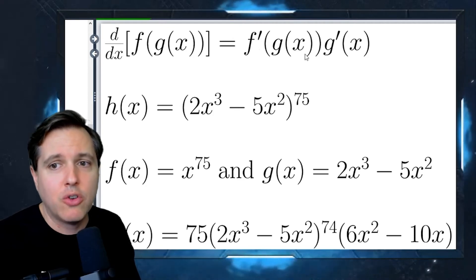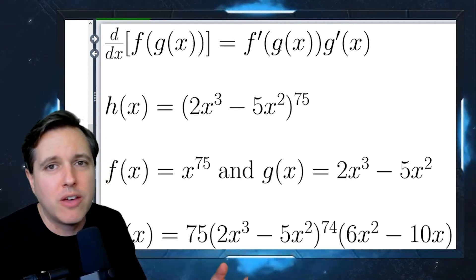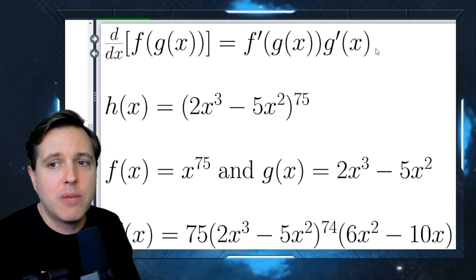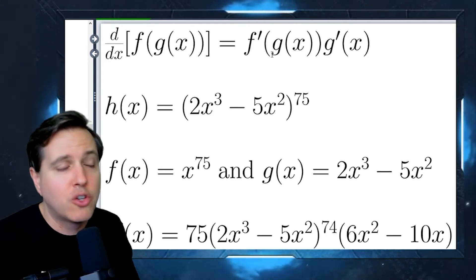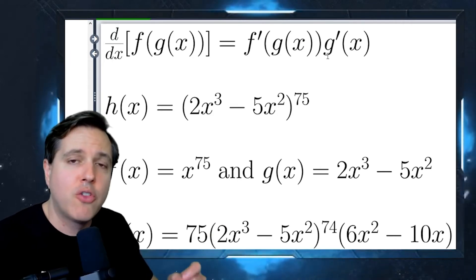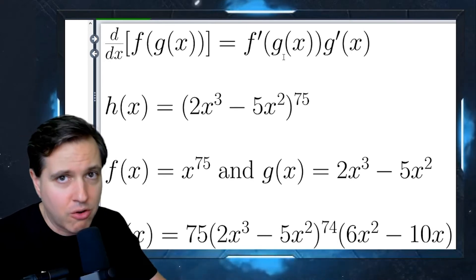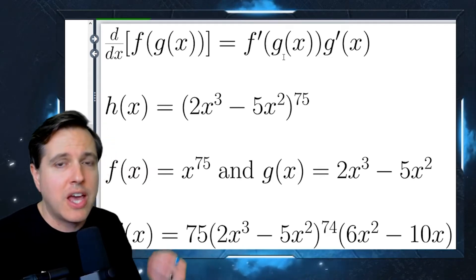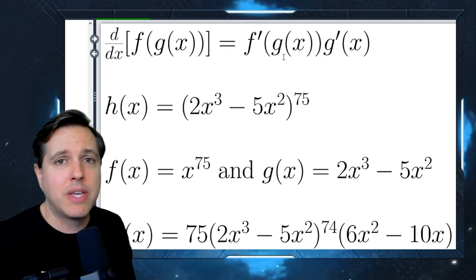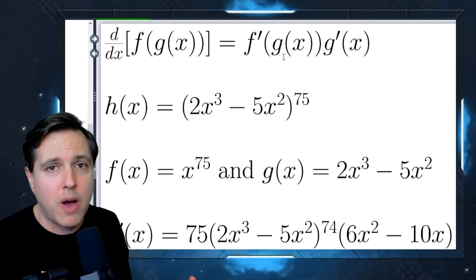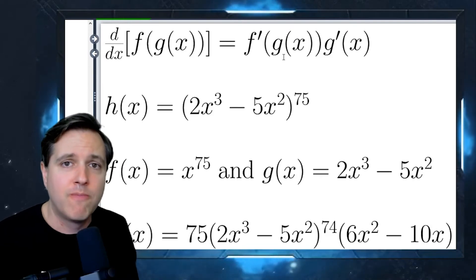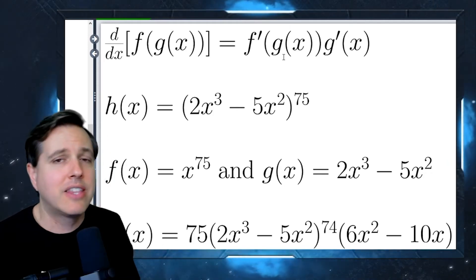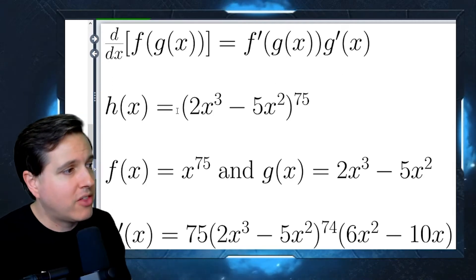That first piece feels natural and intuitive, and that's what people usually do. The piece people forget is the chain rule part: you have to multiply by g prime of x. When you take the derivative with respect to the outer function, you then multiply the whole thing by the derivative of the inner function. This means you need to be good at identifying what's the inner function and what's the outer function. Think about order of operations — where would you start evaluating? That's your inner function. What you do last is your outer function.